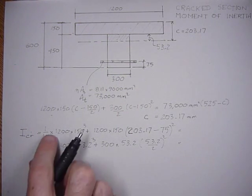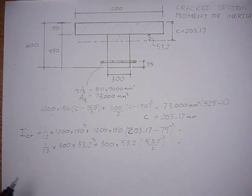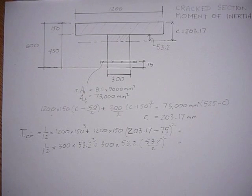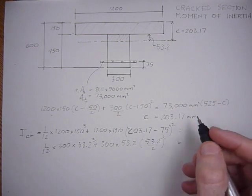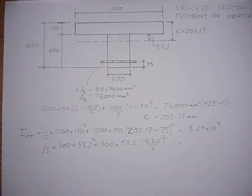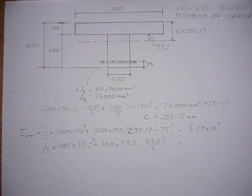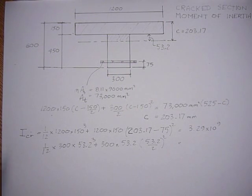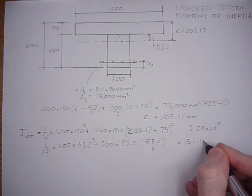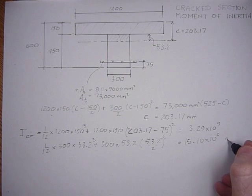Calculating the flange term: (1/12) times 1200 times 150 cubed, plus 1200 times 150 times (203.17 minus 75) squared gives 3.29 times 10⁹ mm⁴. The effective web portion: (1/12) times 300 times 53.2 cubed, plus 300 times 53.2 times (0.5 times 53.2) squared gives approximately 15.1 times 10⁶ mm⁴.